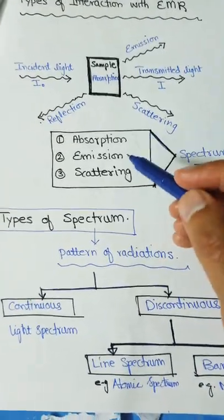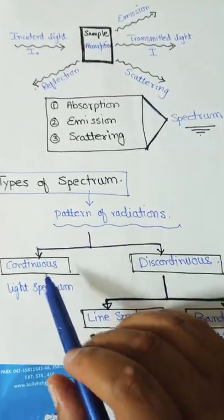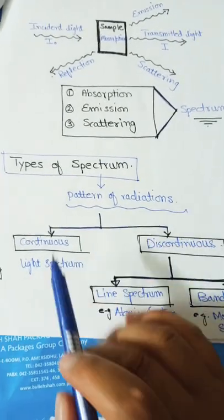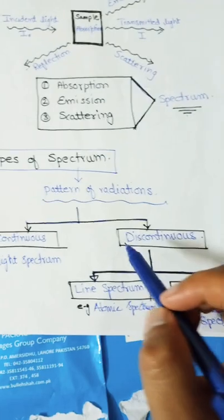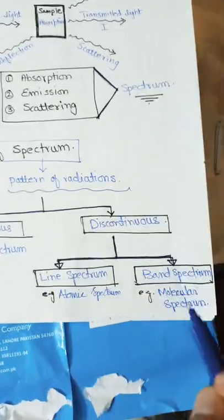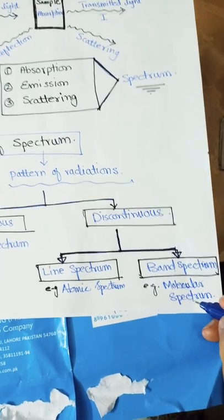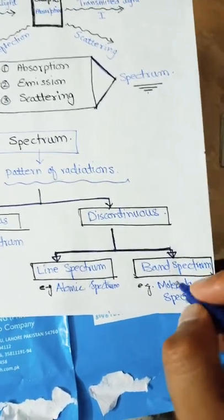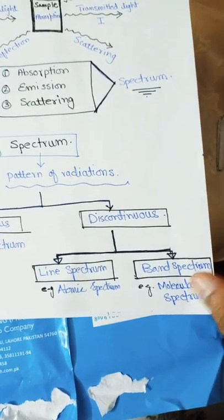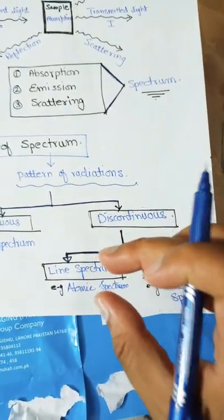The absorption or emission spectrum can be either continuous or discontinuous. A continuous spectrum is like a light spectrum, while a discontinuous spectrum may be a line spectrum or a band spectrum. In a line spectrum — for example, atomic spectrum — only a specific wavelength of light is observed. In a band spectrum, which represents molecular spectrum, a band of different wavelengths is obtained on the recorder.